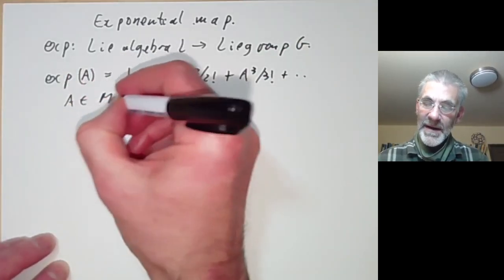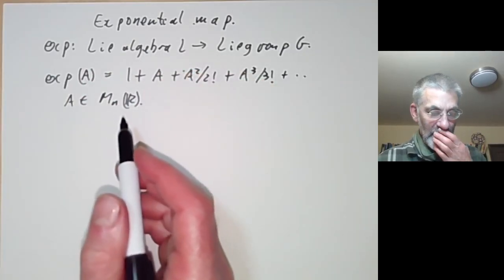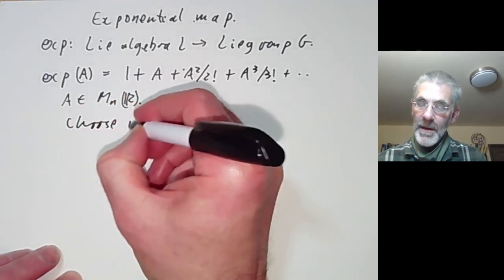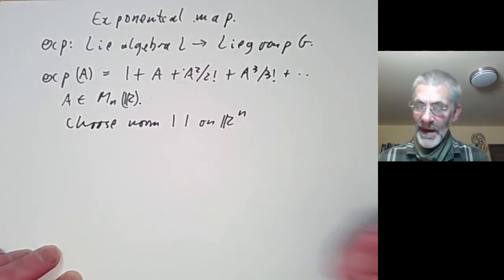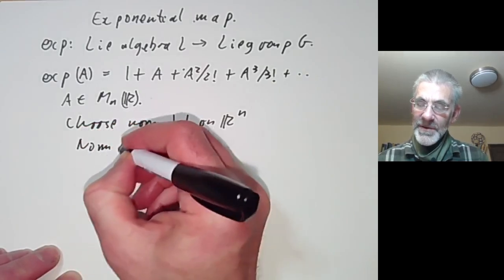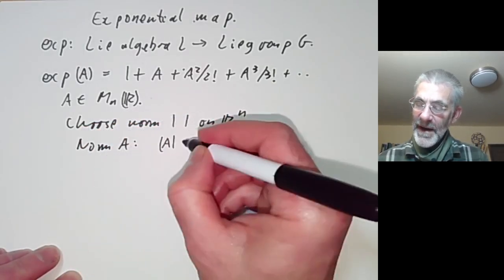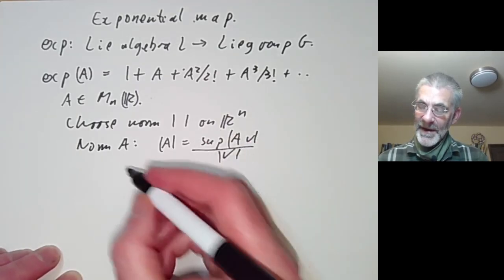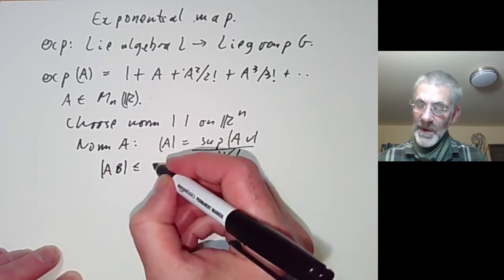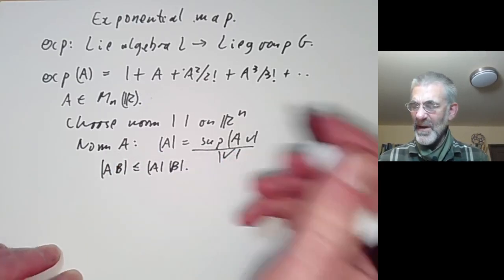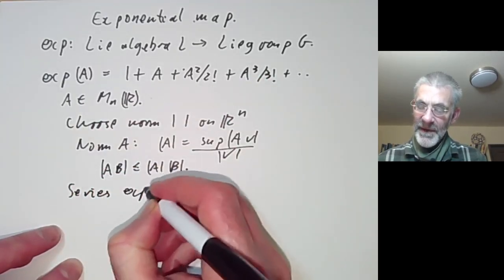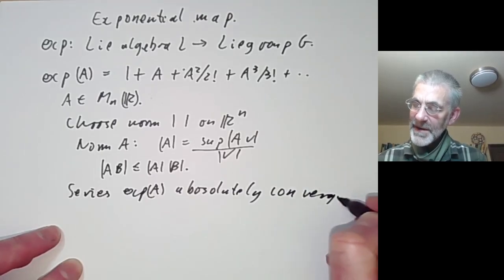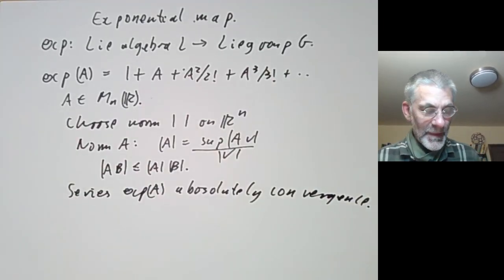Here A is an n by n matrix over the reals. We should check convergence of this series, but this is very easy to do. We choose a norm on ℝⁿ and define the norm of a matrix A as the supremum of |Av|/|v| for v nonzero. This easily implies the norm of AB is less than or equal to the norm of A times the norm of B. You can then check that the series for exp(A) is absolutely convergent, in much the same way as for the usual exponential function of the reals.